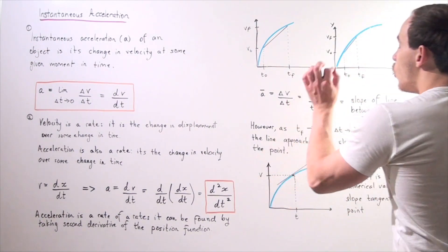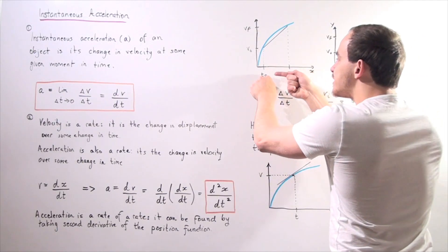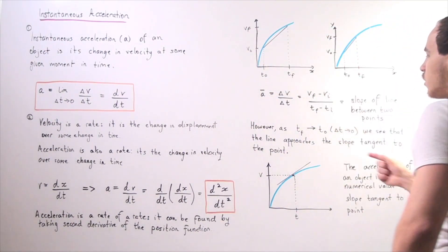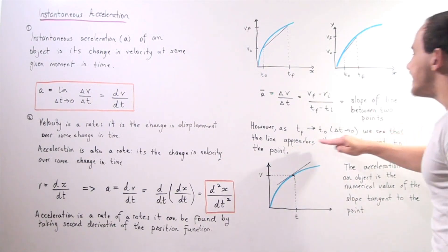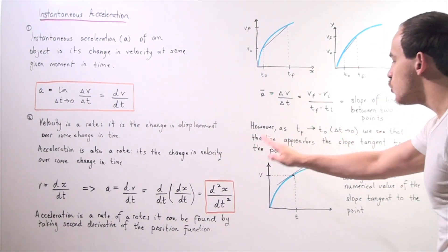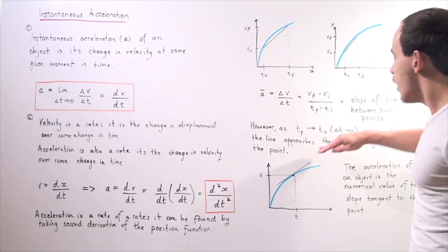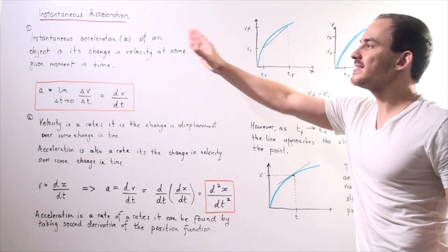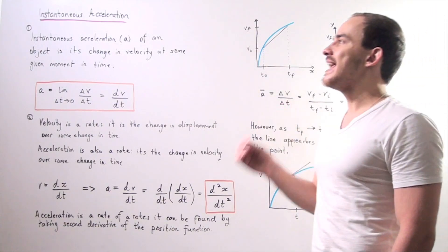How do we find instantaneous acceleration at a specific point? We fix t-not and make t-final approach t-not. As t-final approaches t-not, v-final approaches v-not, and as the change in time approaches zero, the line approaches the tangent to that point. Eventually, the slope of the tangent line at the point (t, v) gives us our instantaneous acceleration. The instantaneous acceleration of an object is the numerical value of the slope of the line tangent to that point on the velocity-time graph.